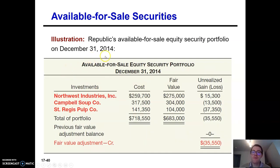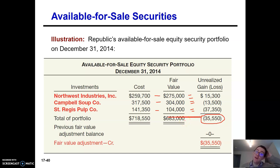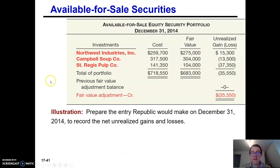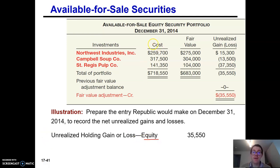At December 31st, end of the year, we have a chart with the cost and fair value of everything, and the difference is an unrealized gain or loss. It appears we didn't pick stocks very well — overall we have an unrealized loss of $35,550. Assuming a previous balance of $0 on the fair value adjustment account, we adjust it for $35,550. We debit unrealized holding gain or loss — equity (because these are available for sale securities) and credit the fair value adjustment account — available for sale.